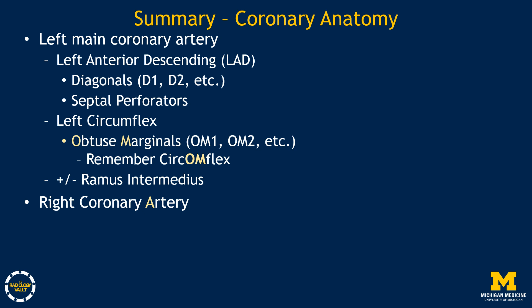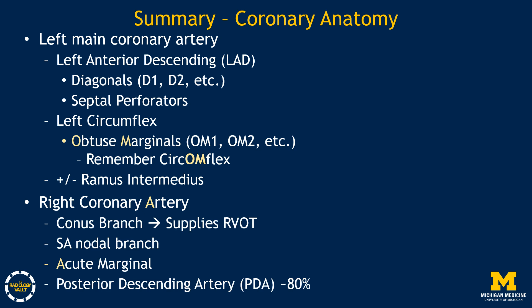The right coronary artery typically gives off a first branch called the conus branch, which supplies the right ventricular outflow tract. The SA nodal branch is identified by its posterior course toward the interatrial septum. The RCA also gives off acute marginal branches — remember: A for RCA/acute marginal versus OM for circumflex. In right dominant individuals, approximately 80% of the time, the RCA terminates as the posterior descending artery. Otherwise, patients may have left dominant circulation supplied by the left circumflex, or co-dominant circulation supplied by both.